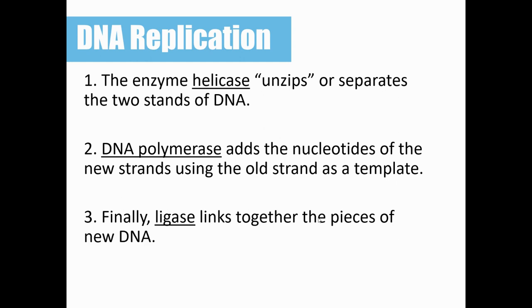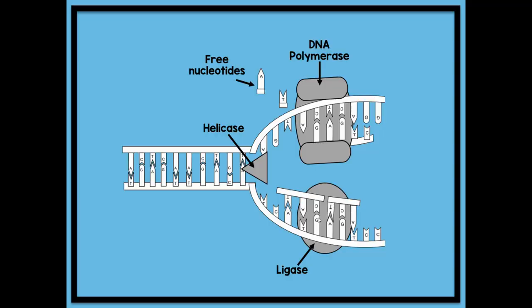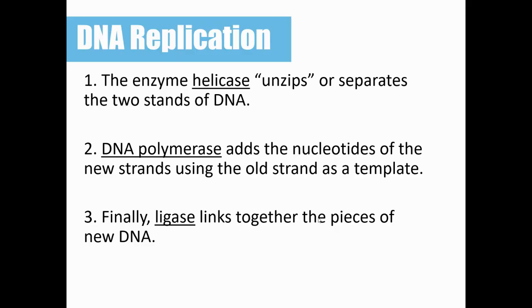Now if you're trying to get that in word form, so if you want to copy down what I just said in word form, this is what you'll need to put in your notes. So this is just what we went over here in image form. So the enzyme helicase is going to come in and unzip or separate the two strands of DNA. And then the DNA polymerase is going to come in and add those nucleotides from the nuclear environment. And it's going to use the old strand as a template for doing that. And then finally ligase is going to link together the pieces of that new DNA.